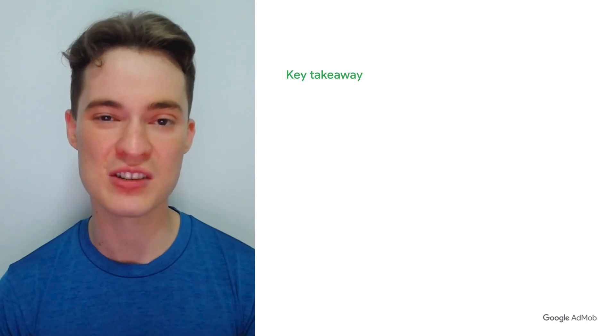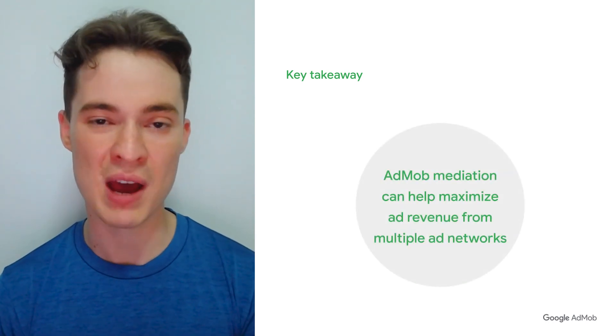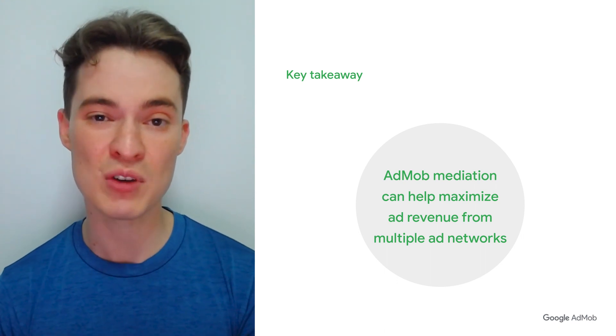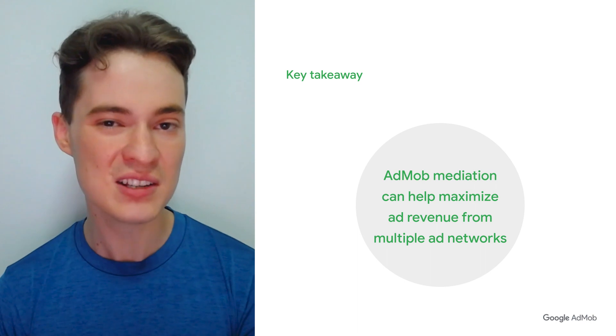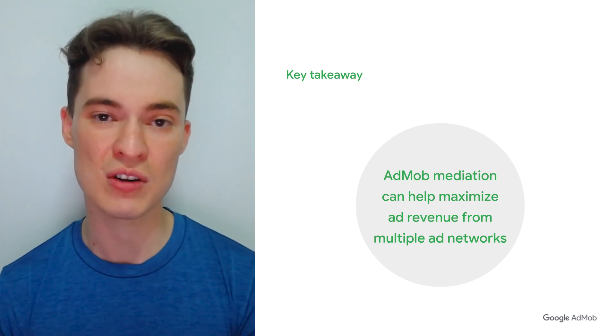And that's all we have for you on mediation. In summary, if you're looking for an easier way to maximize revenue from multiple ad networks, try AdMob mediation. To learn more about AdMob mediation features and how to set them up in your account, check out the tutorial link in the description below. Thank you for watching Google AdMob tutorials. For more best practices and tips on how you can grow your app further, be sure to subscribe to the Google AdMob channel. See you next time!